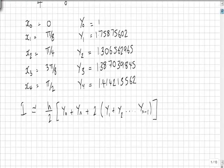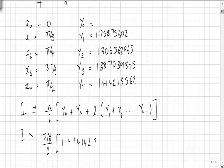So if we substitute in our values, we know that the width of our strip is π/8, so that's π/8 divided by 2, times y₀ plus yₙ, which in this case is y₄, the last ordinate 1.414213562, plus twice the remaining ordinates which we calculated previously.